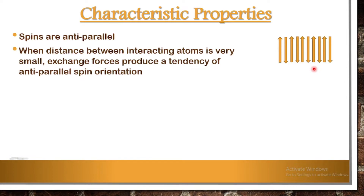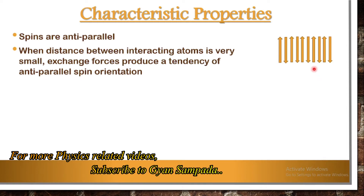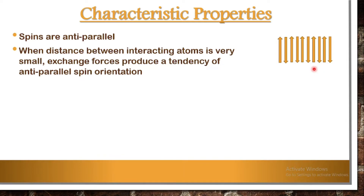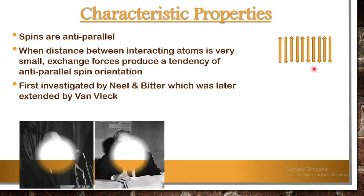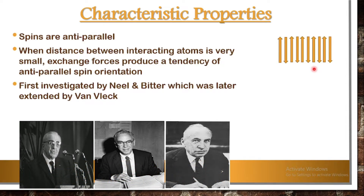The key factor is that the distance between the two atoms needs to be very small, which is responsible for exchange interaction leading to antiparallel arrangement of neighboring spins. Such systems were first investigated by Néel and Bitter, and the concept was later extended by Van Vleck. The details given about the magnetic system were mainly theoretical. These three — Néel, Bitter, and Van Vleck — were responsible for the theoretical development of antiferromagnetism.